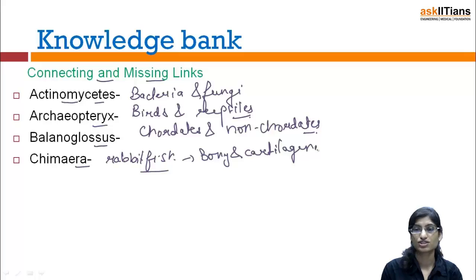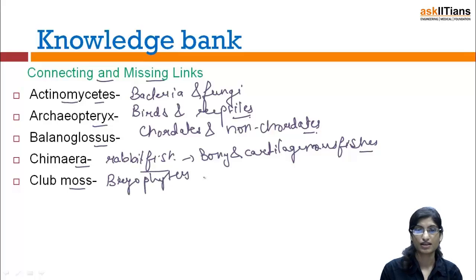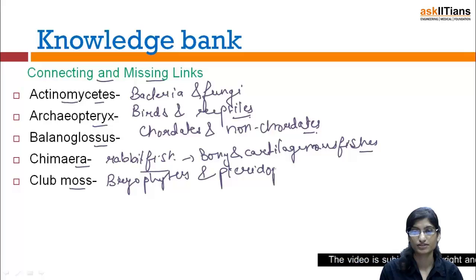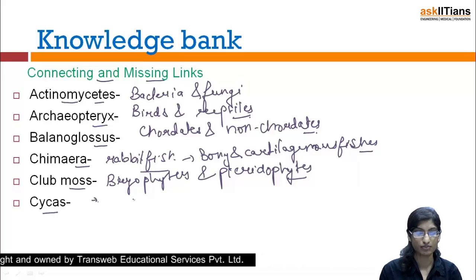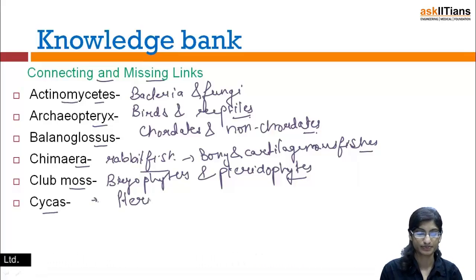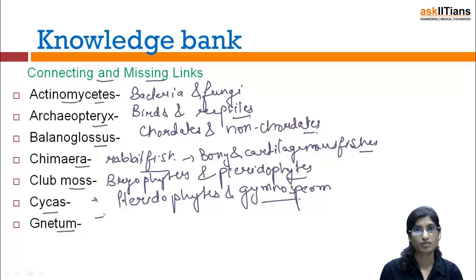Next one is Club Moss — it is the connecting link between pteridophytes and bryophytes. Bryophytes are basically the amphibians of the plant kingdom. Next one is Cycas — it is the connecting link between bryophytes and gymnosperms. Learn this carefully.